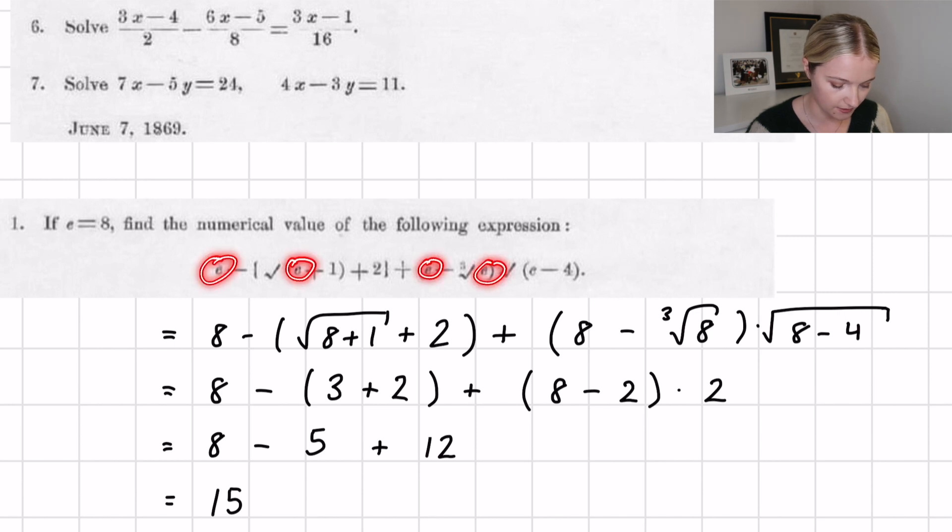So all I did was I substituted 8 into here, here, here, here, and here, which gives me this line here, and then some very simple simplifying. And we get the answer is 15. So the first question, very very nice.